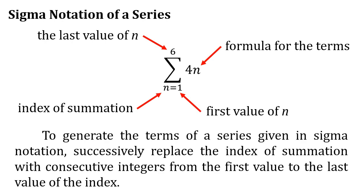To generate the terms of a series given in sigma notation, successively replace the index of summation with consecutive integers from the first value to the last value of the index.